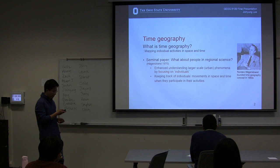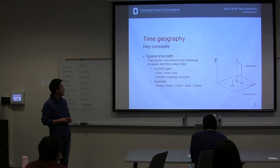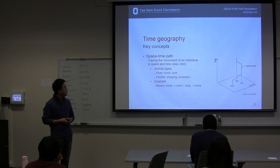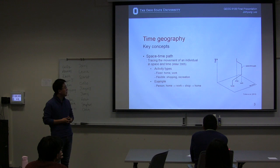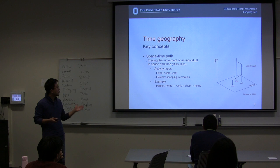There are two key concepts in Time Geography. The first one is the space-time path, which traces the movement of an individual in space and time. The movement occurs when someone participates in activities. There are two types of activities: the first is fixed, such as home or work, and there are also flexible activities such as shopping or recreation.